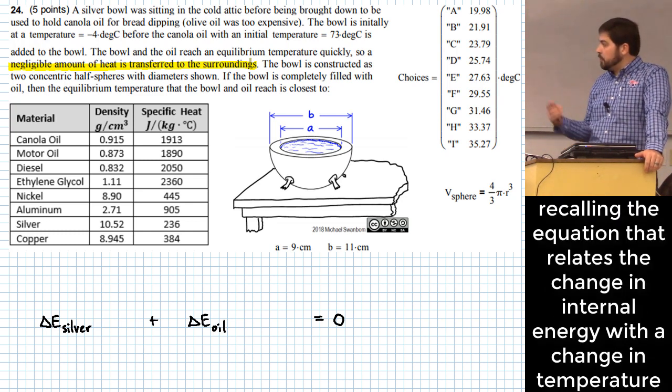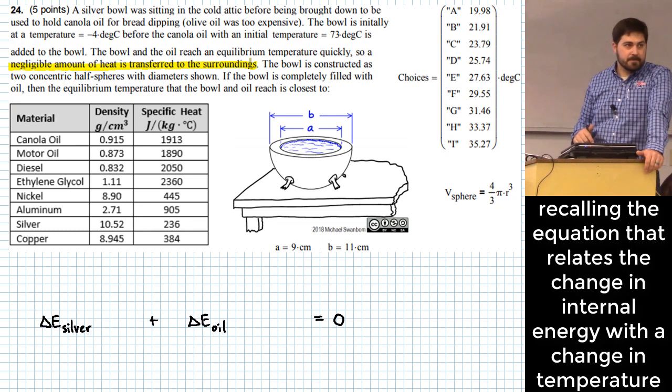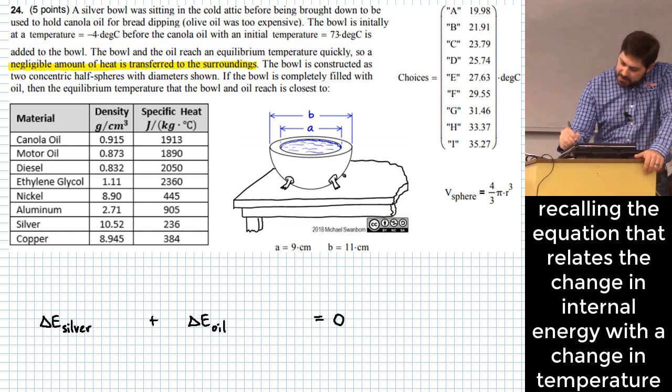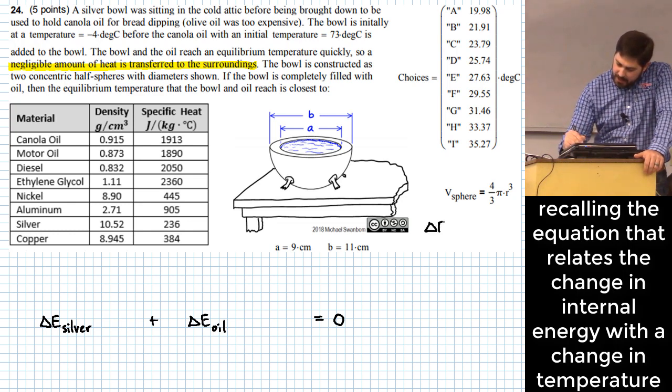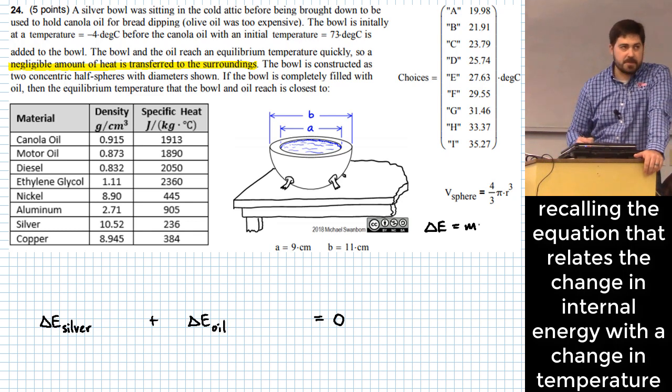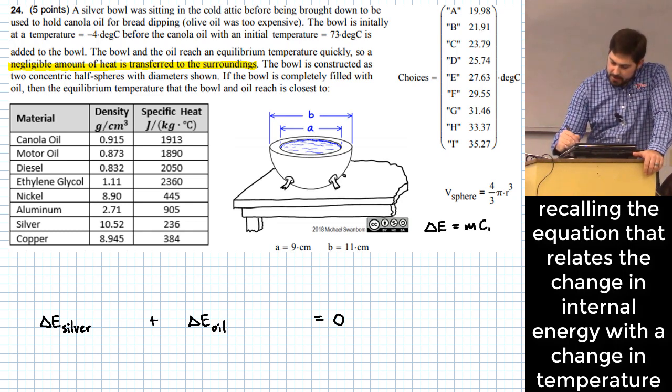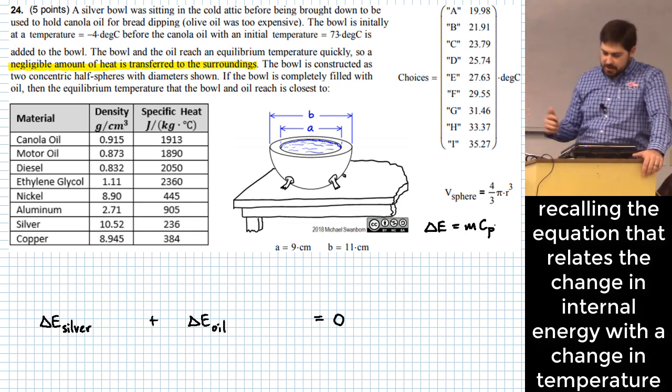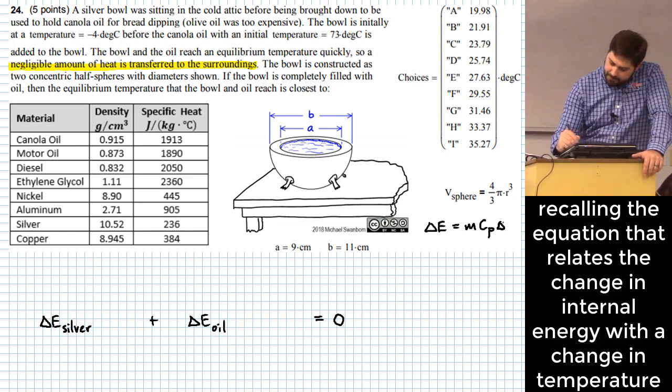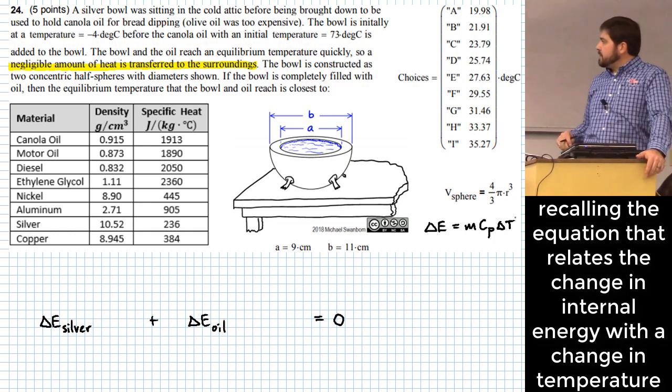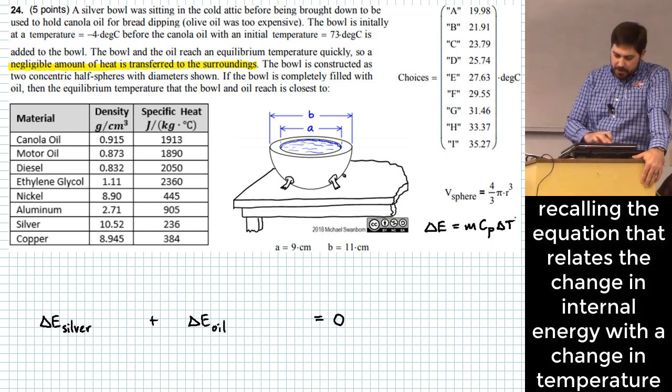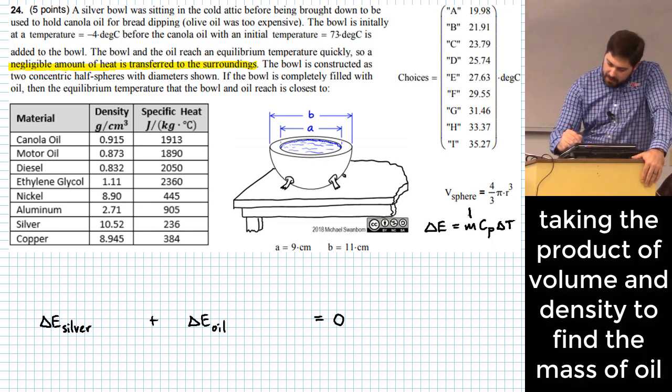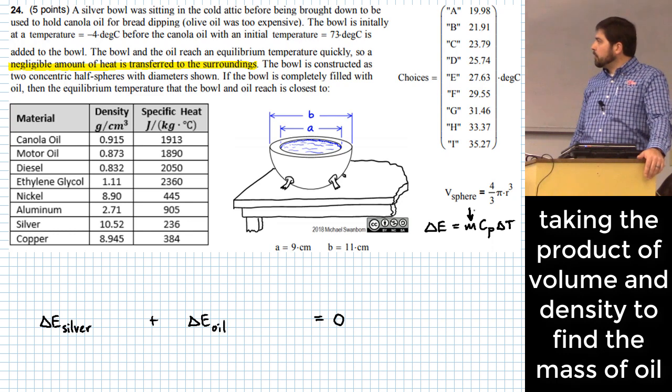So what's our basic equation that we use for a change in internal energy based on temperature change? MC delta T. So delta E is equal to the mass of something that is changing temperature times C sub P, which is the specific heat of the material that is changing temperature, and then delta T as the change in temperature. So we're going to do that for the silver and for the oil. It's going to be set equal to zero. How do we get these M's for the silver and for the oil?